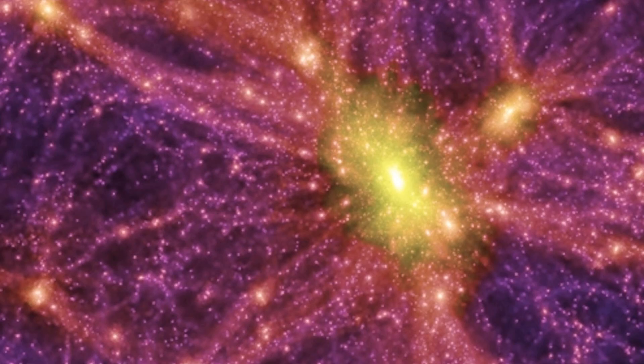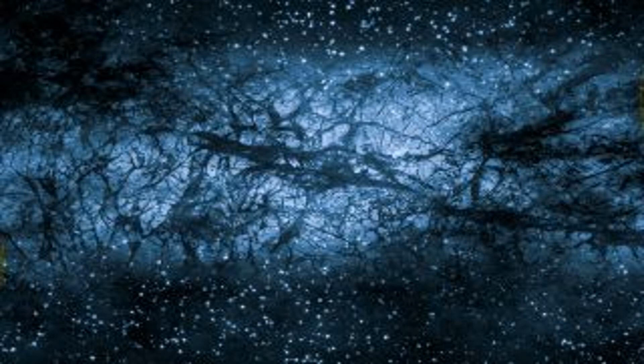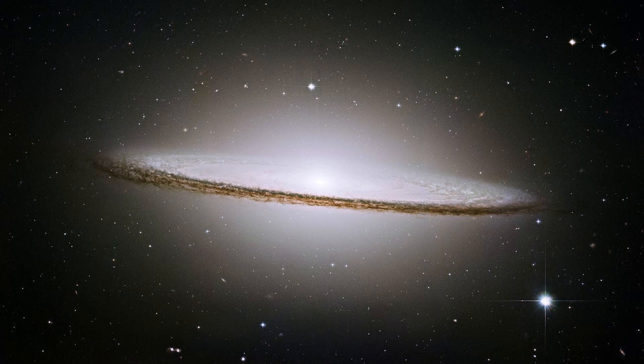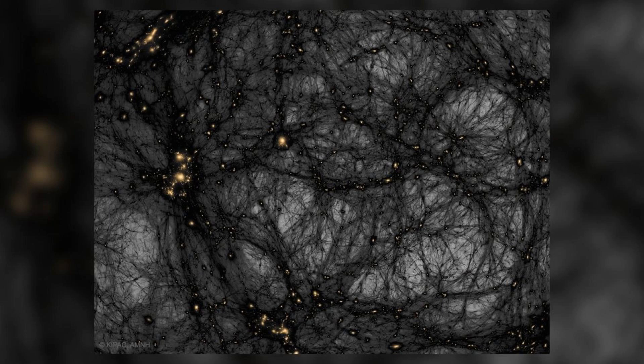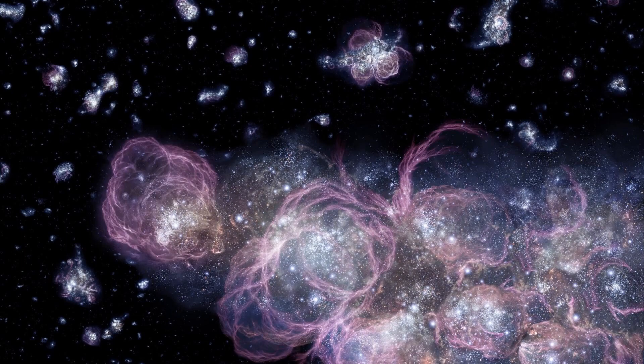Dark matter is a mysterious substance that makes up about 85% of the matter in the universe. It is called dark because it does not interact with light or any other form of electromagnetic radiation, which means it cannot be seen directly with telescopes or detected by any other method used to detect normal matter.